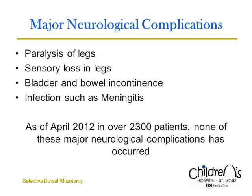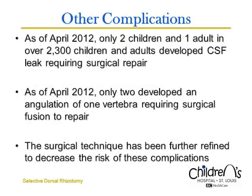Dorsal rhizotomy is a complex procedure and carries risks. The major risks are paralysis of the legs, including permanent and complete paralysis, sensory loss in the legs, loss of bladder and bowel control, impotence in males, and infection such as meningitis. The complications are, in general, apparent within a week after surgery. Other complications may include spinal fluid leak. If spinal fluid leak occurs, the leak site may need to be closed in the operating room. The surgical technique has been further refined to decrease the risk of spinal fluid leak.